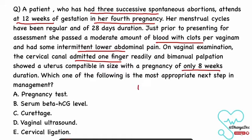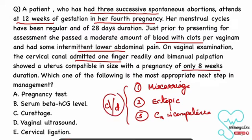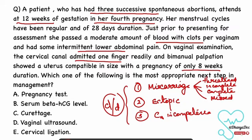The differentials that come to mind are: first, miscarriage — which has six types: threatened, incomplete, complete, missed, septic, and inevitable; second, ectopic; and third, cervical incompetence. So these are the differentials to consider.